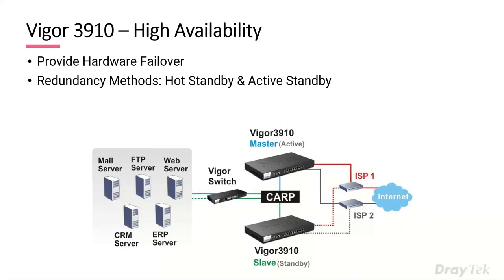Worth mentioning on the 3910 is high availability. As the central device, if it goes down due to hardware failure, that would be an issue. You can have two devices in high availability mode so that if there's a power issue to the first device, the second can kick in as a standby and take over seamlessly without administrator intervention. There are two methods: hot standby and active standby, and you can configure them to share or use separate internet connections.